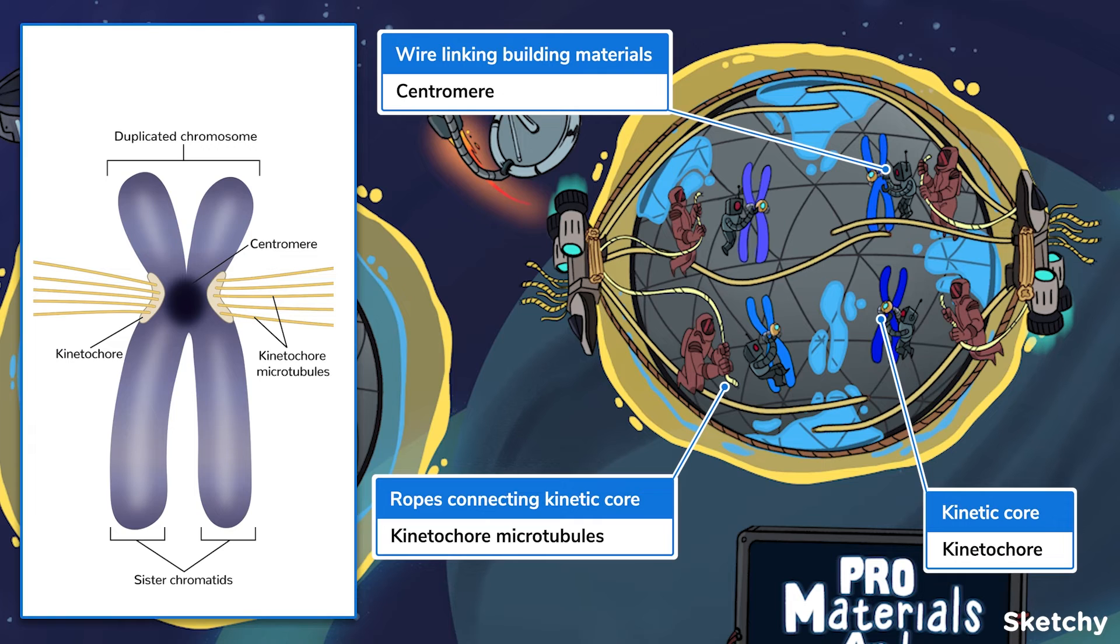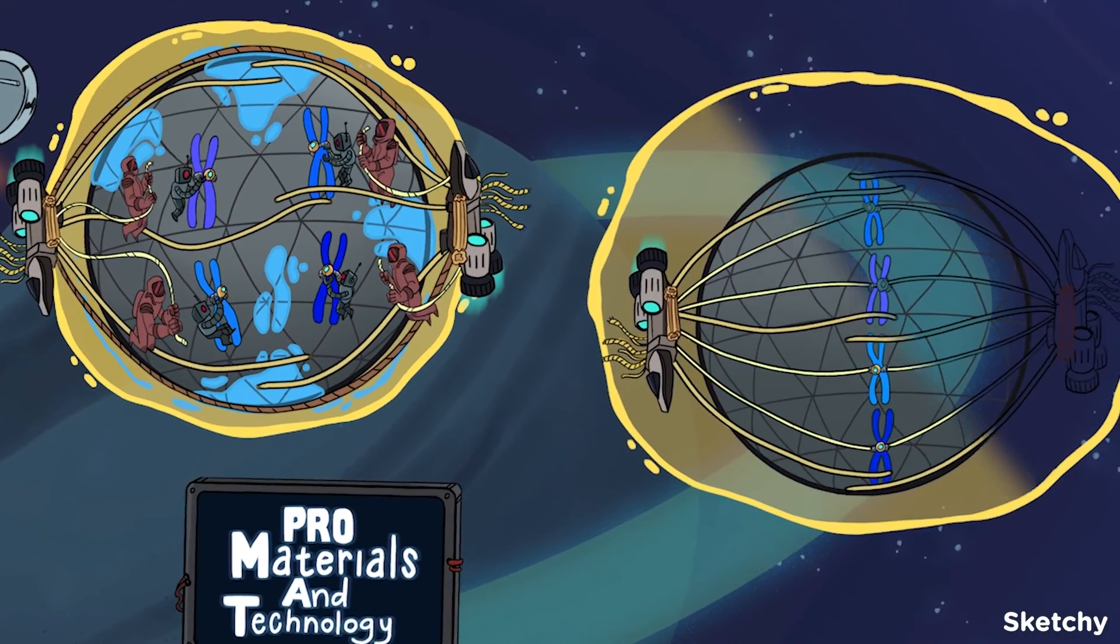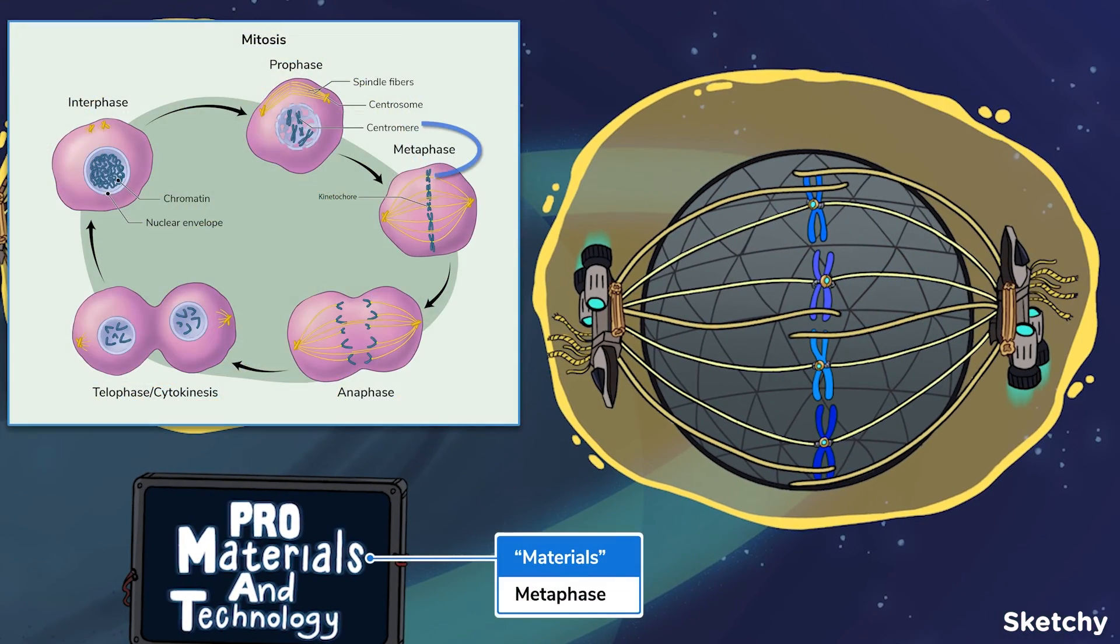And lastly, kinetochore microtubules bind to kinetochores. Remember that kinetochores hook onto the centromeres. And the centromeres, well, they link up the sister chromatids. Alright, now that we've got all our X's hooked up, we can move on to the next stage, metaphase.